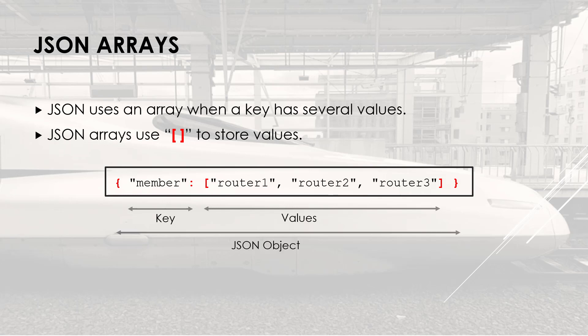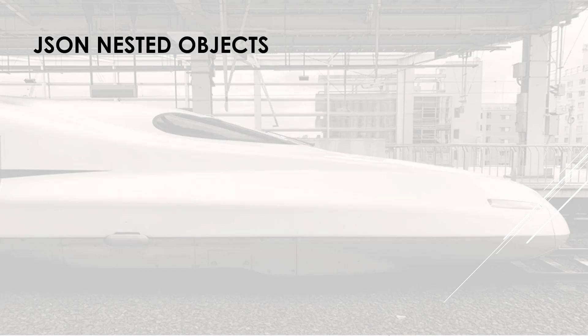The entire JSON object is placed between curly brackets. Now, if you remember my previous video with XML, we had the XPath concept that allows us to create sub-levels of XML code. With JSON, we have something very similar, which is the concept of nested objects, where objects will be nested inside each other.